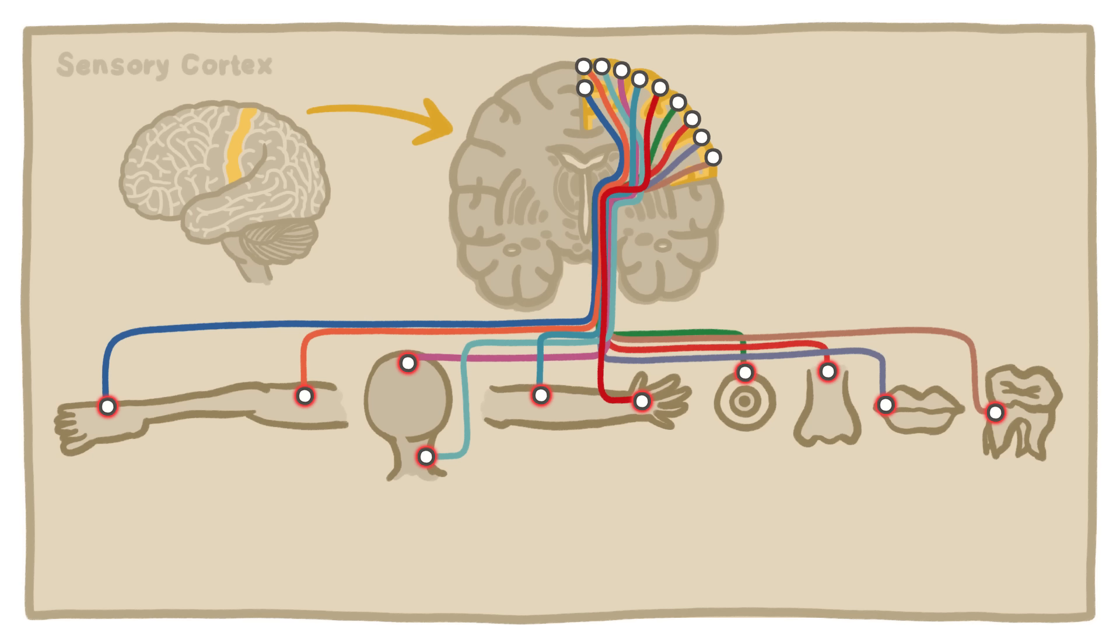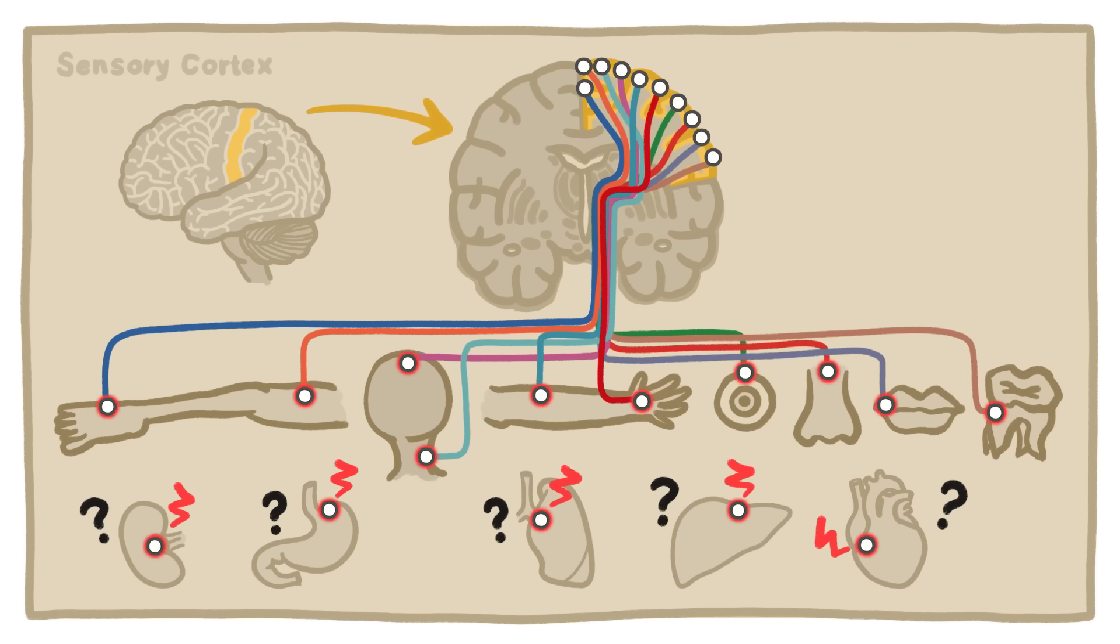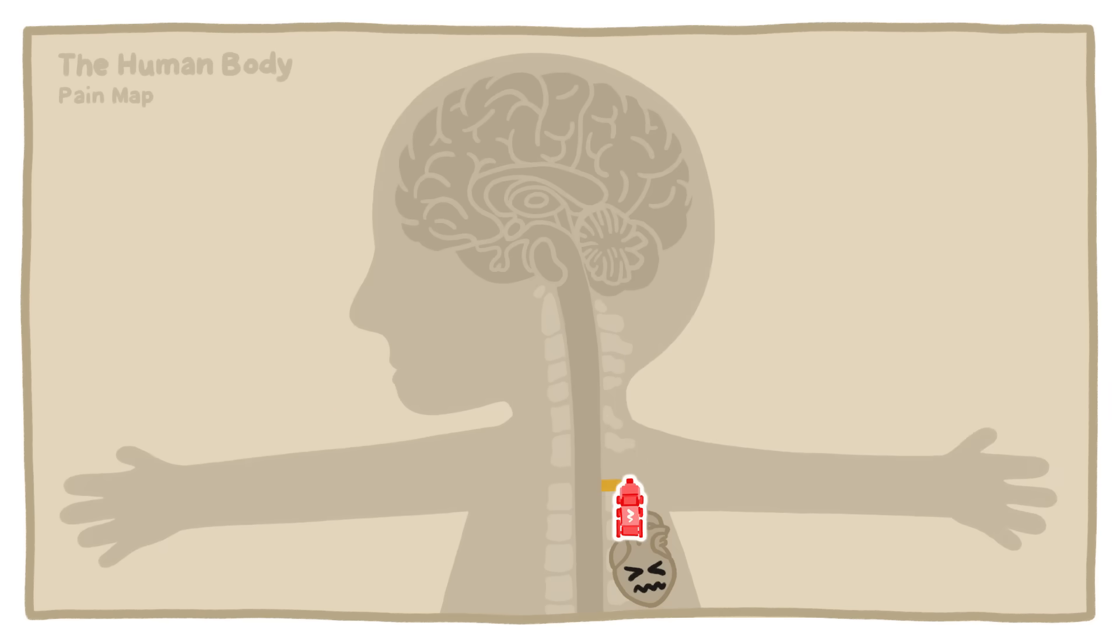But little or none of the sensory cortex deals with pain from internal organs. This doesn't mean the organs can't send pain signals anyway. When pain signals from a hurt organ get to the spinal cord, they are often forced to merge onto pain pathways from other, more sensitive body parts.